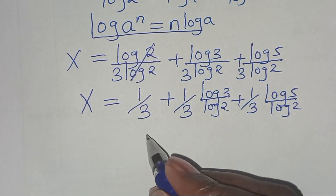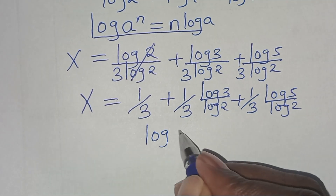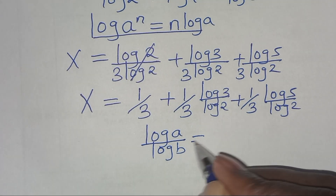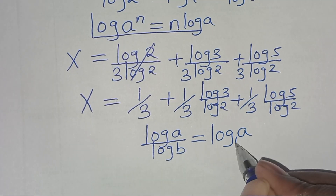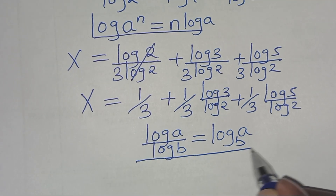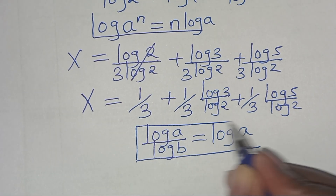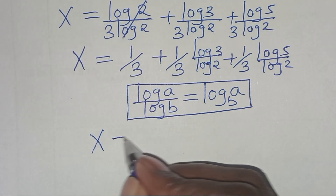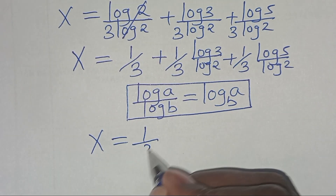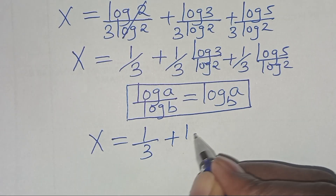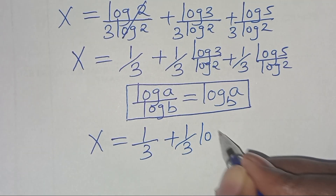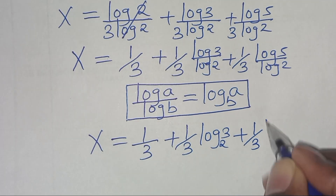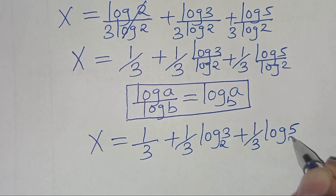Now, log 3 divided by log 2 is in the form of log a divided by log b, which we can express as log a to base b. Applying this change of base property, x is equal to 1 over 3 plus 1 over 3 times log 3 to base 2, then plus 1 over 3 times log 5 to base 2.